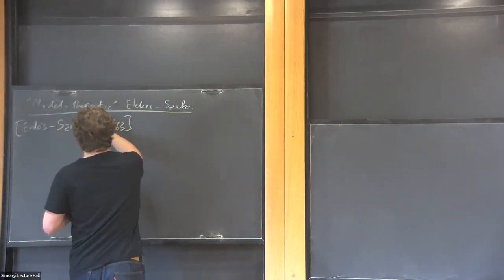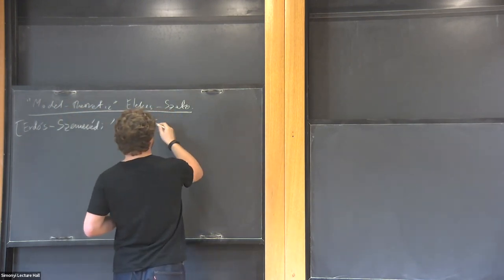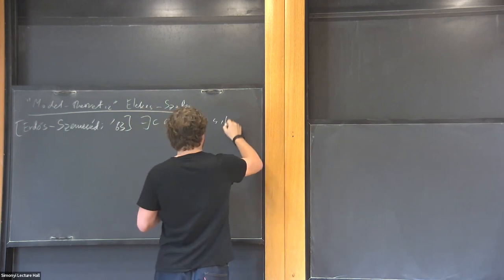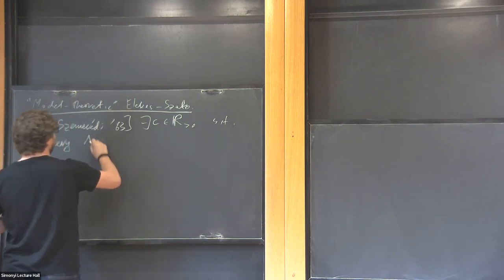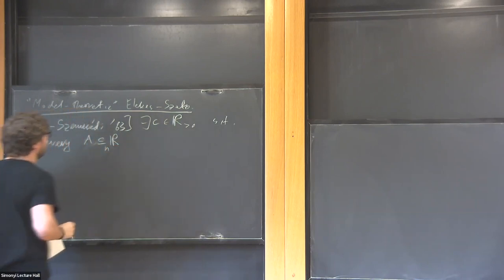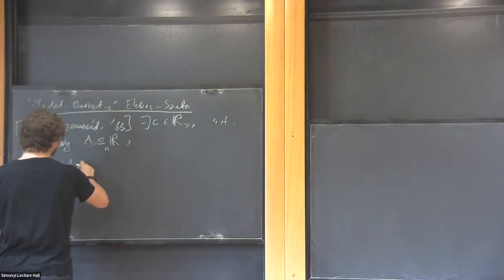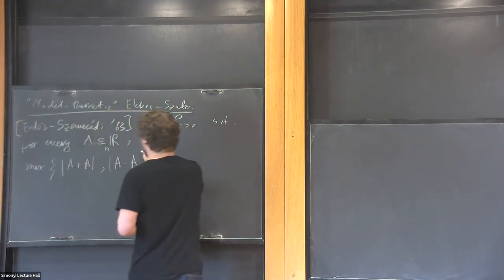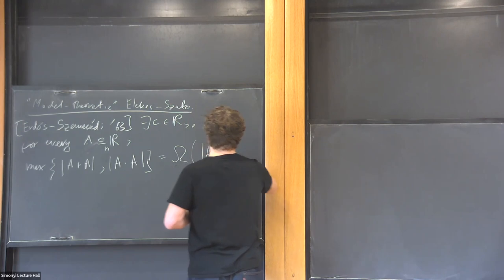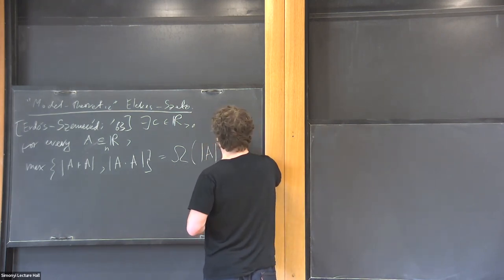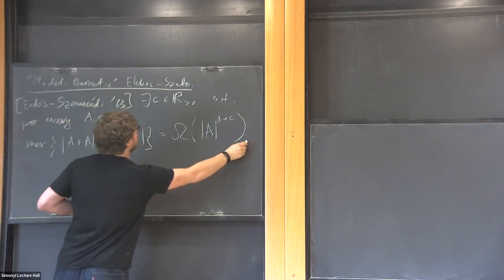One explicit way to say that addition and multiplication in the real numbers don't really interact: there is some absolute constant c as a positive real number, such that for every finite set A of n real numbers, the maximum of the cardinality of the sumset A+A and the product set A·A has size significantly bigger than the cardinality of A — at least n to the power of 1 plus c, for some absolute constant.